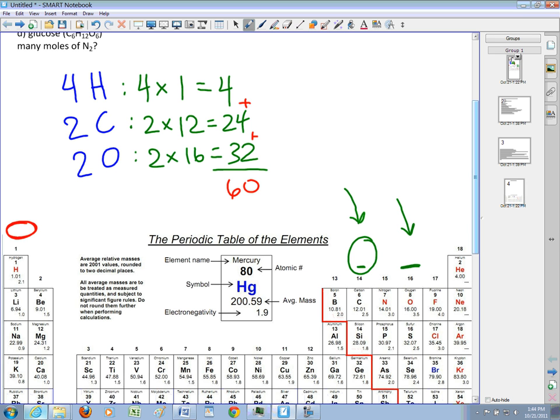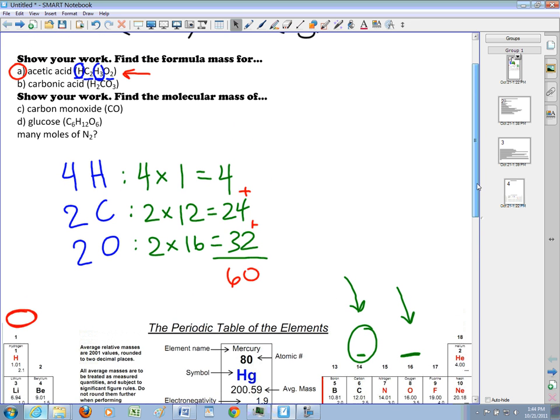And because we're calculating - I'm just going to go back up to the question here and read it one more time - we're calculating the formula mass. It's going to be in atomic mass units. So our answer of 60 here is going to be written as 60 AMU. That's the formula mass for acetic acid.